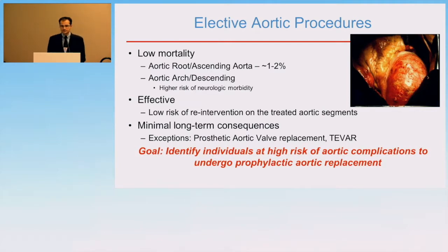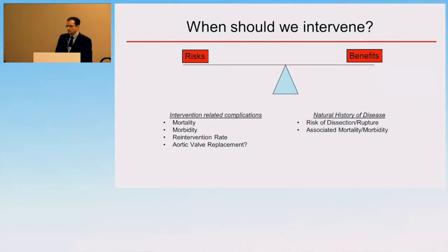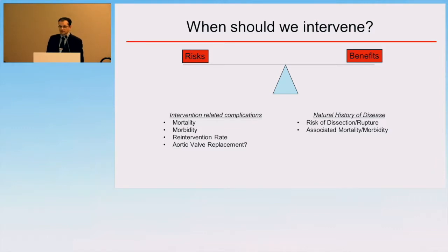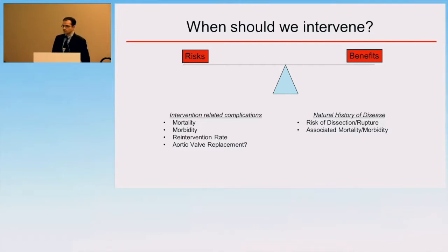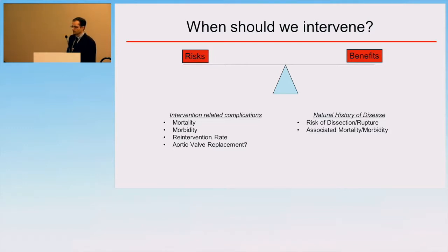Our goal when seeing these patients is to identify those at high risk of aortic complications so we can select them for prophylactic aortic replacement. In doing so, we're weighing the risks of intervention — mortality, morbidity, re-intervention rates, need for aortic valve interventions — against mitigating the risks of natural history, which include dissection, rupture, and associated mortality and morbidity. One thing we often don't consider, but probably should, is the impact on quality of life and lifestyle choices for patients on both sides of that spectrum.